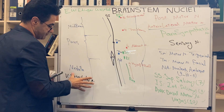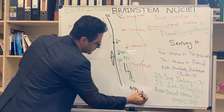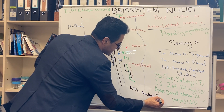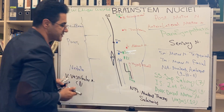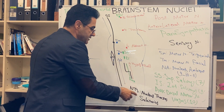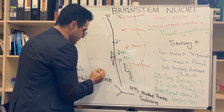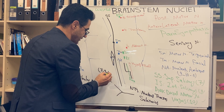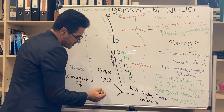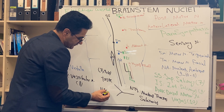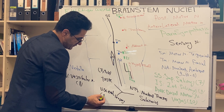The next sensory nucleus is in the medulla. It's a chair-shaped nucleus called NTS — Nucleus Tractus Solitarius. The rostral two-thirds of the NTS is related to taste, coming from the tongue and associated with cranial nerves 7, 9, and 10. The caudal one-third carries sensory information from the viscera.